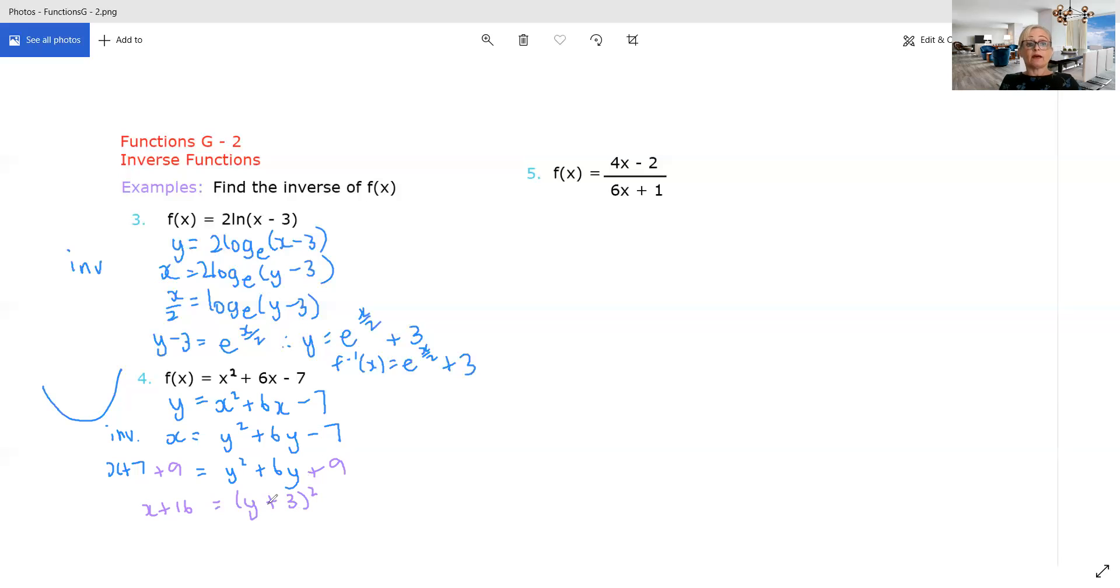So this is x plus 16 and this will be y plus 3 all squared. Taking square root of both sides now, this is where you can tell that it's not going to be a function because if you do plus or minus square root, you're automatically getting two possible y values for each x value. So that's your y plus 3. So y is this minus 3. So that's your f inverse.